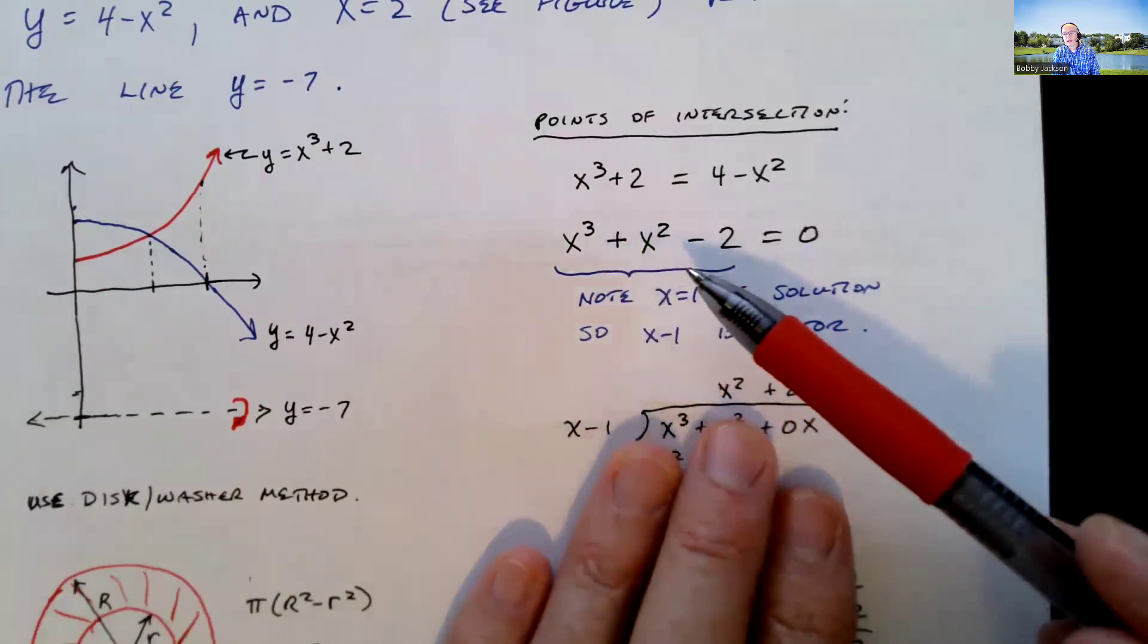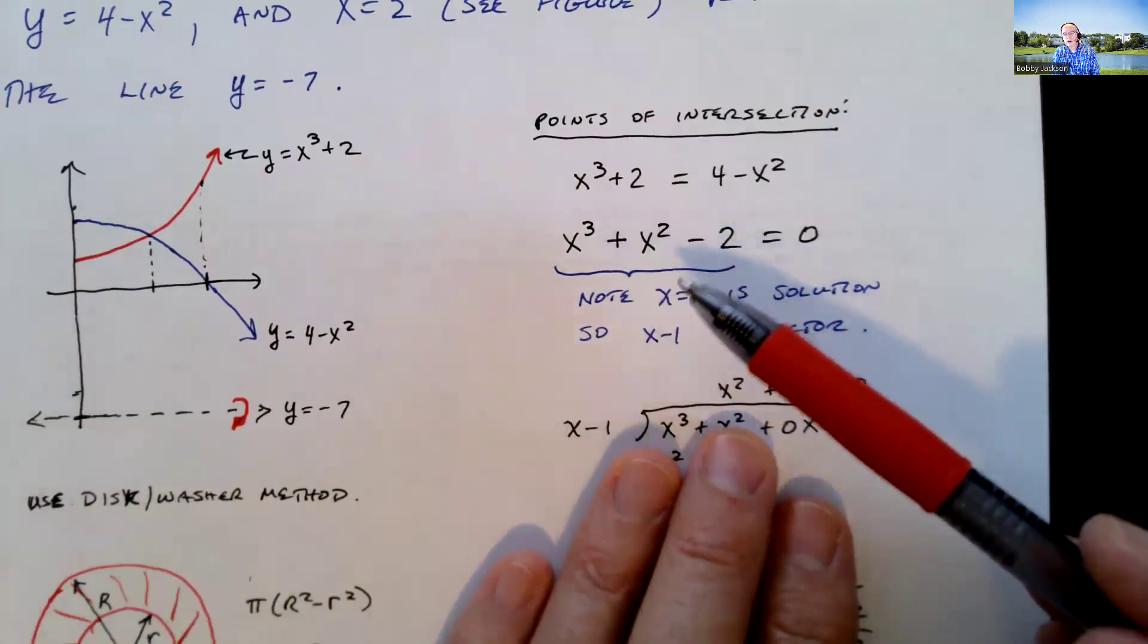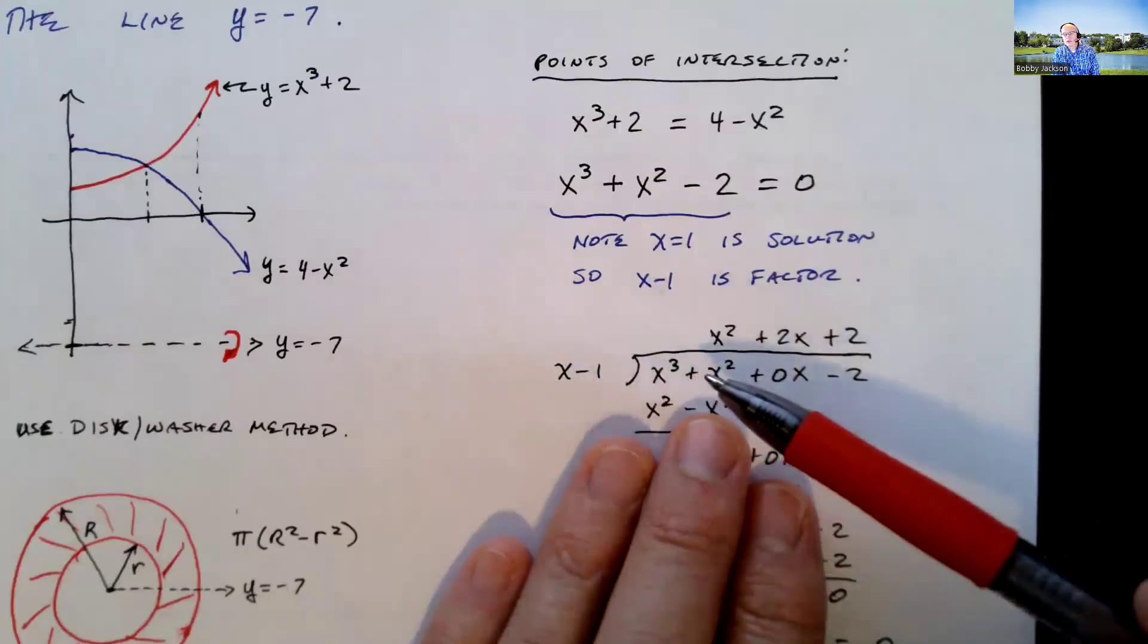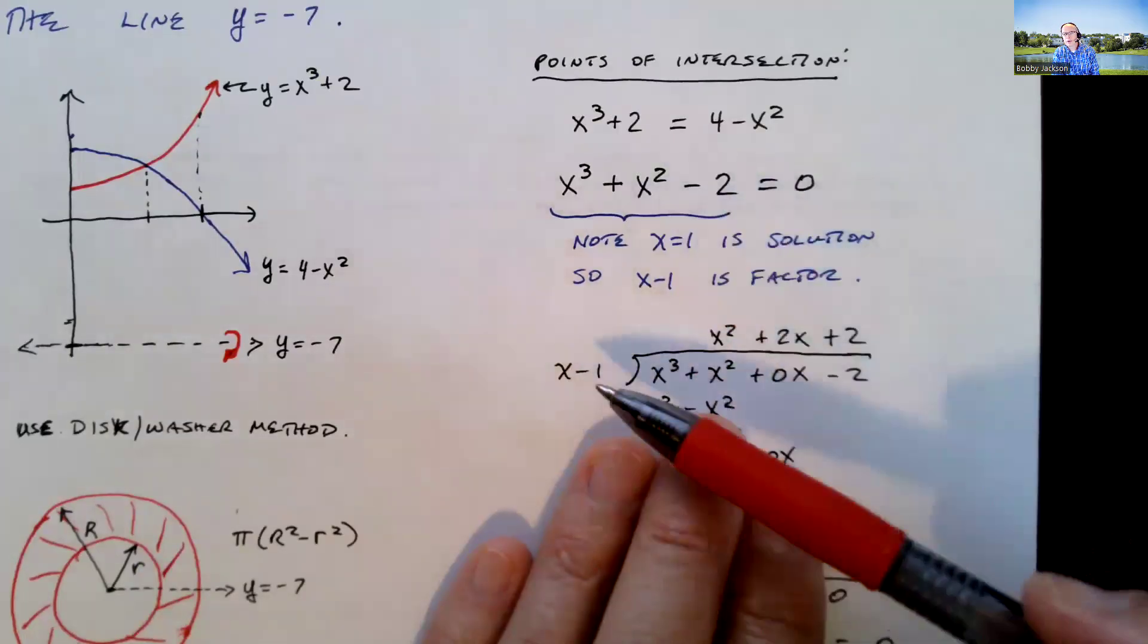I actually don't need to in this problem, but I'm going to go and factor it anyway, just to review. If you use synthetic division, you can do that as well. But I'm going to divide, do polynomial long division, x minus 1 divided into x cubed plus x squared. I put in a placeholder of 0x. Of course, that's just 0 minus 2.